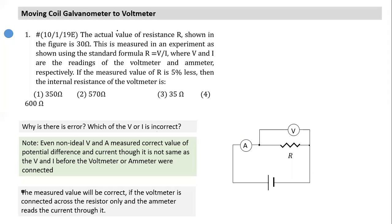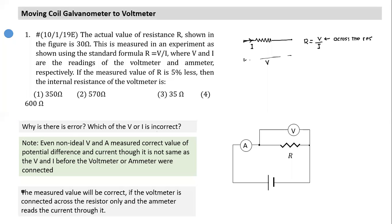Take a moment to understand this. For correct measurement of R, V must be across the resistor and I must be the current through the resistor. In this circuit arrangement, the voltmeter is connected across the resistance, so it correctly reads the potential difference across R in the current state.